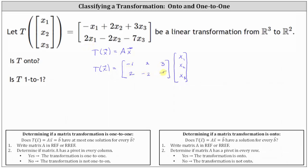Using the coefficients of the first equation, the first row is negative one, two, three. Using the second equation, the second row is two, negative two, negative seven. So matrix A is the two-by-three matrix with first row negative one, two, three, and second row two, negative two, negative seven.